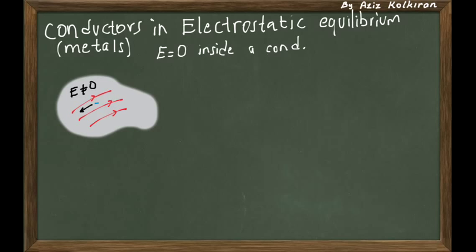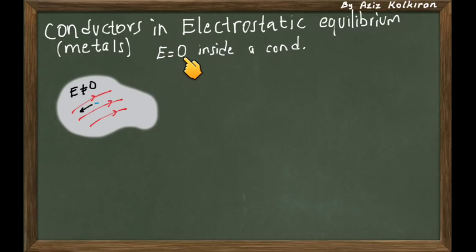But this violates the condition that the conductor is in electrostatic equilibrium. What we mean by electrostatic equilibrium is that all the free charges must be in a steady state — a motionless state. So if there is an electric field inside the conductor, this violates the equilibrium condition that the charges must stay at rest. Therefore, the electric field must be equal to zero everywhere inside the conductor.